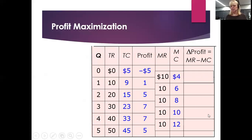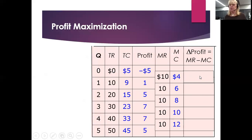Let's look at marginal costs and marginal revenue. Marginal cost is change in total cost divided by change in quantity. When we go from 0 to 1, marginal revenue is 10 and marginal cost is 4, giving a marginal profit of 6. Then marginal profit is 4, then 2, then zero marginal profit, then we go into the negatives.